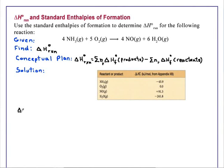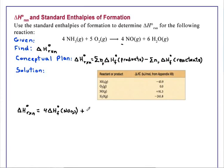Delta H standard of reaction is equal to 4 times — because of the coefficient 4 in front of NO — the standard enthalpy of formation of NO gaseous, plus 6 times — because of the coefficient of 6 in the equation — the standard enthalpy of formation of gaseous water. Be careful that you get the states correct when looking up values.